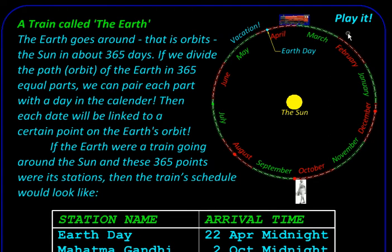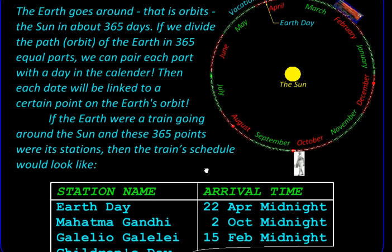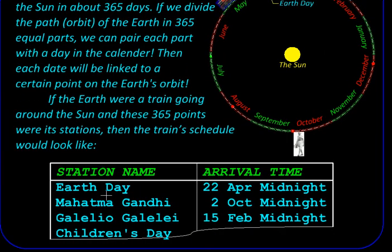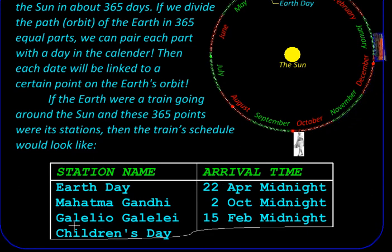We can visualize this by imagining the Earth to be a train going around the sun, and the 365 days are its stations. Its schedule might look something like this: there is a station called Earth Day, and the train arrives there on 22nd of April. There is a celebration going on at that station all the time — we just happen to arrive there on 22nd April and pass through in a day. Similarly, there is a station called Galileo Galilei — his birthday is celebrated there all the time, but we arrive there on 15th of February and pass through in a day.